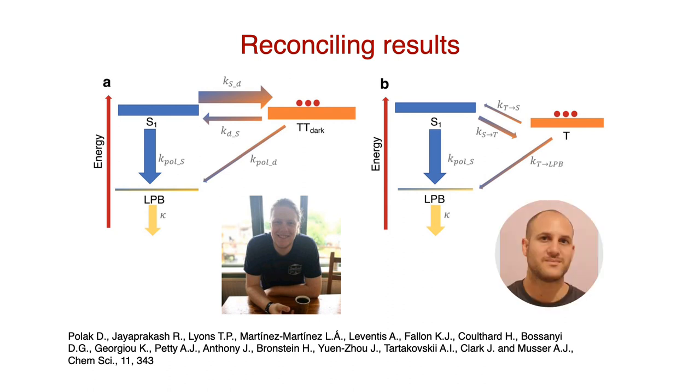On the other hand, for Elad Eisner's experiment, the population in the triplet, once that reaches the electronic states S1, they quickly decay to the lower polariton because the transfer rate from the singlet to the LPB is in the order of nanoseconds, whereas the transfer of population between the triplet and the S1 is of the order of microseconds. So in this case, the most efficient channel to transfer population corresponds to the S1 to LPB, whereas in the Daniel's experiments, the most efficient channel of transfer of population corresponds to the one of S1 to TT dark.